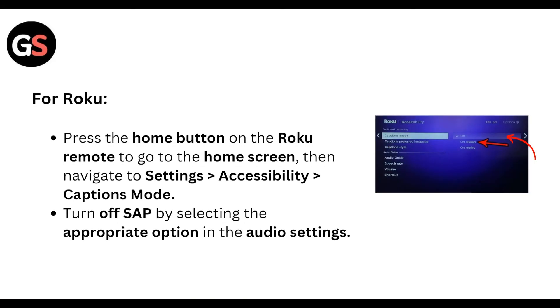For Roku, press the home button on the Roku remote to go to the home screen, then navigate to Settings, then Accessibility, then Caption Mode. Turn off SAP by selecting the appropriate option in the audio settings.